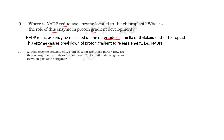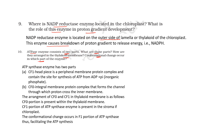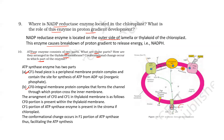Tenth question: ATP synthase enzyme consists of two parts — what are they and how are they arranged in the thylakoid membrane, and in which part does conformational change occur? It has two parts: CF1 and CF0. CF0 works as a transmembrane channel. CF1 is a peripheral membrane protein containing the ATP synthase enzyme, so that ADP plus inorganic phosphate can combine to form ATP. Conformational change occurs in CF1 so that ATP formation can take place.